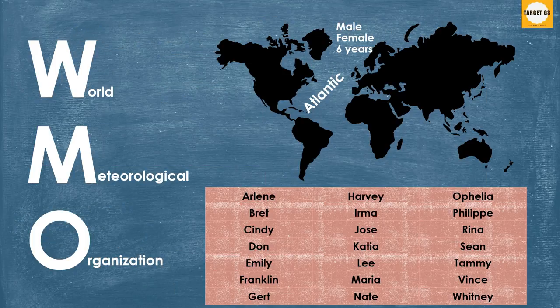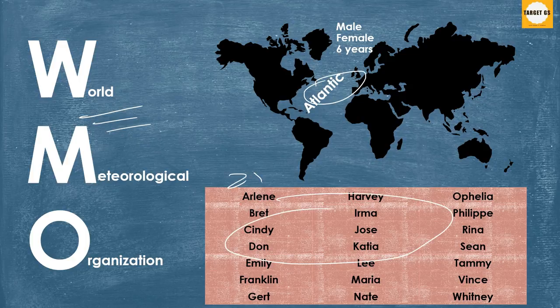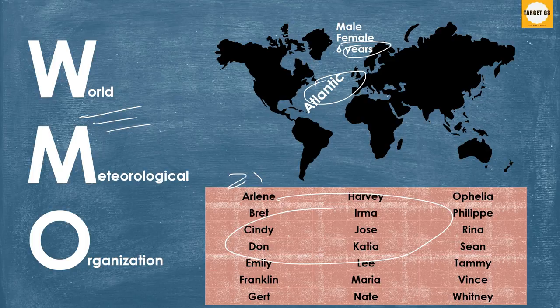There is a strict procedure established by the WMO. For Atlantic hurricanes, there is a list of 21 male and female names used on a 6-year rotation. If a storm does a lot of damage, its name is sometimes taken off the list and replaced by a new name that starts with the same letter. If there are more than 21 named tropical cyclones in a season, additional storms take names from the Greek alphabet.